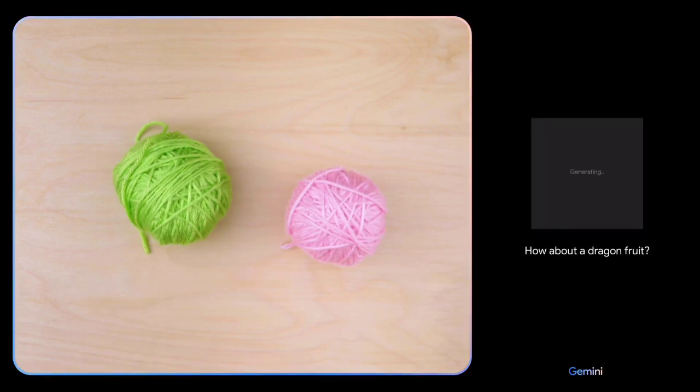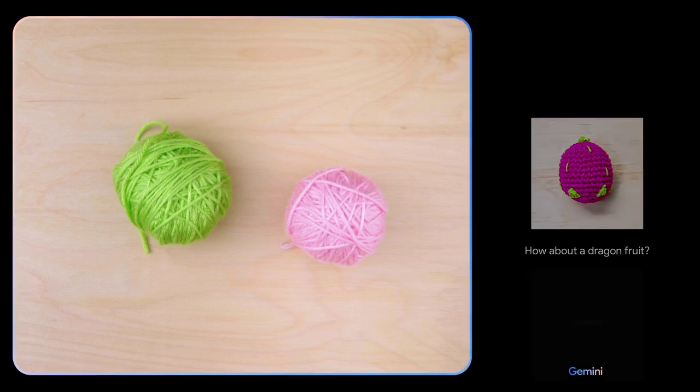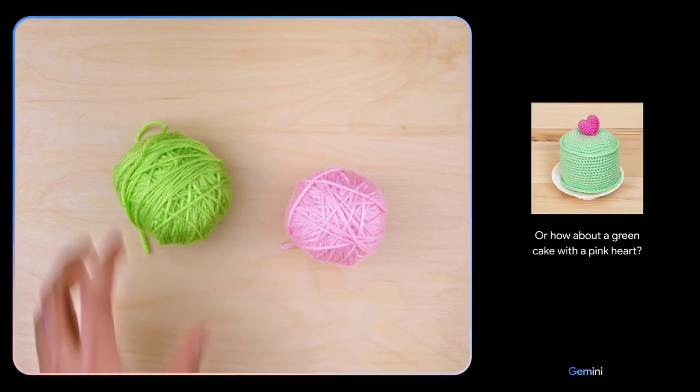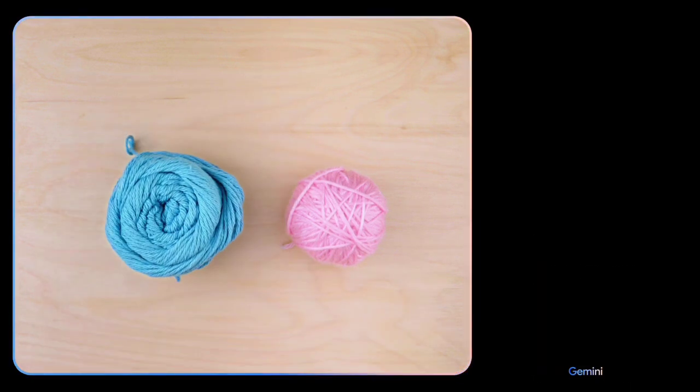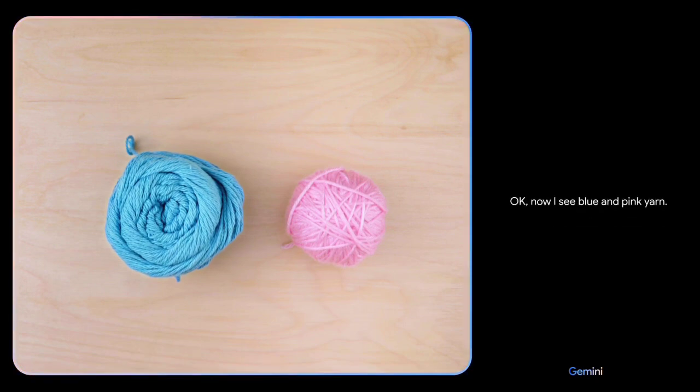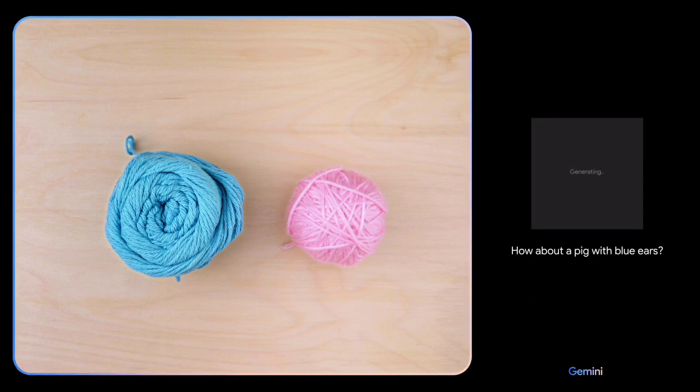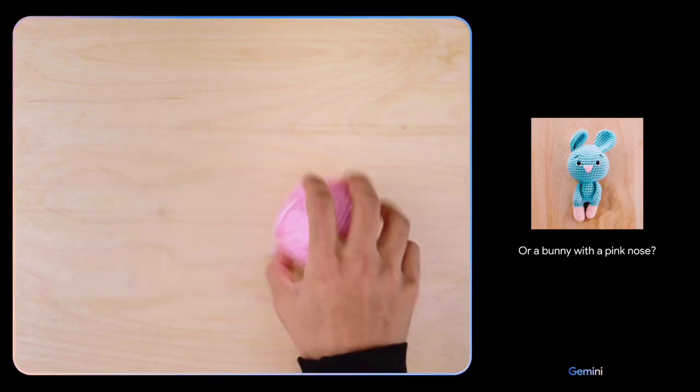Give me some ideas for what I could make with this. I see pink and green yarn. How about a dragon fruit? Or how about a green cake with a pink heart? Okay. How about these colors? And maybe show me some animals. Okay. Now I see blue and pink yarn. How about a pig with blue ears? Or an octopus? Or a bunny with a pink nose? Ooh. I'll keep those in mind.